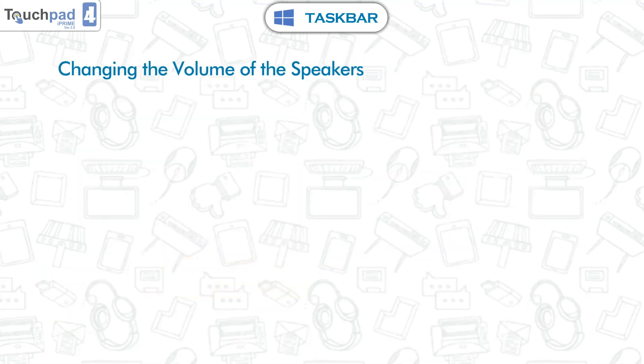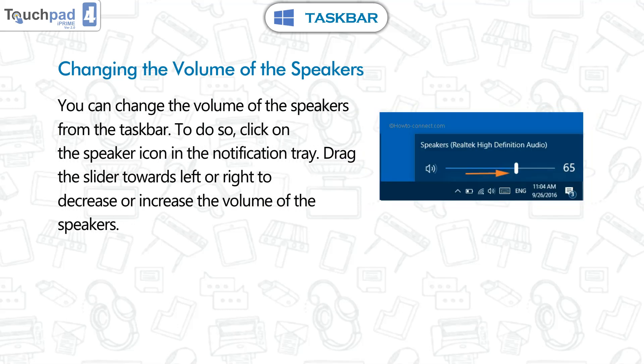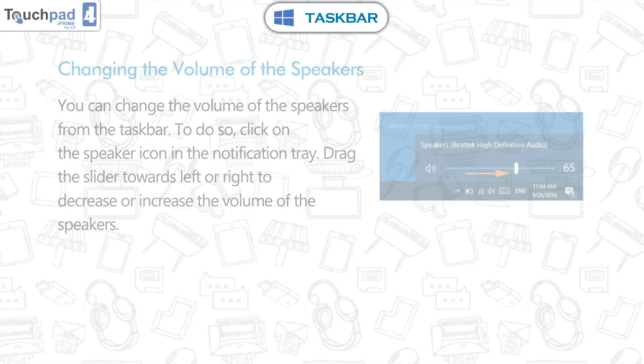Changing the volume of the speakers. You can change the volume of the speakers from the taskbar. To do so, click on the speaker icon in the notification tray. Drag the slider towards left or right to decrease or increase the volume of the speakers.